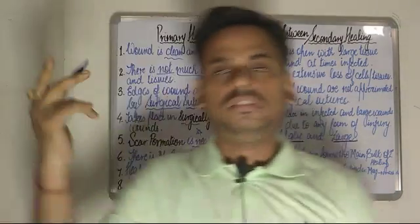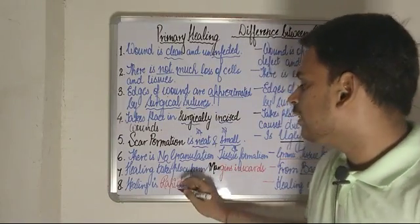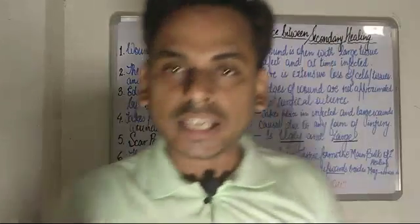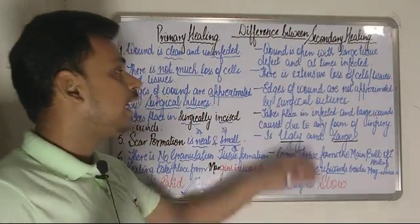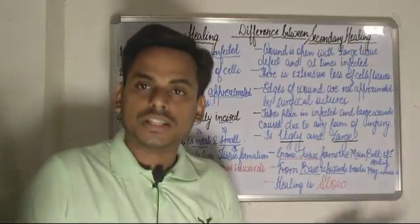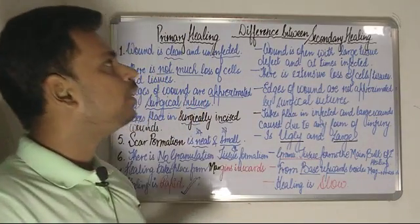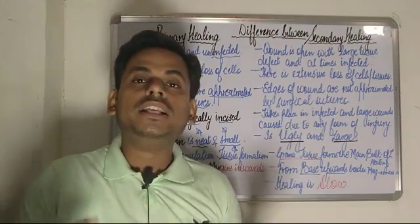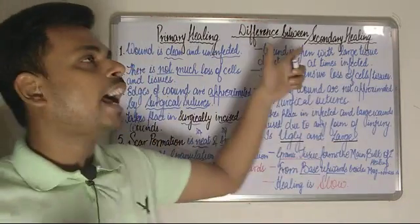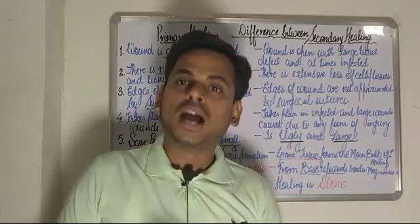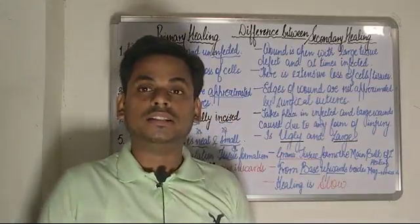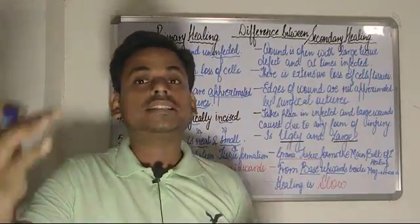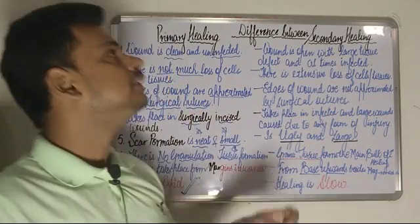Finally, in primary healing the healing process is a rapid one, whereas in secondary healing the healing process is relatively slower. This concludes the short discussion on the two forms of wound healing — primary and secondary — and upcoming videos will cover the exact mechanisms and steps involved.